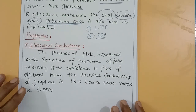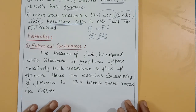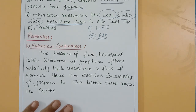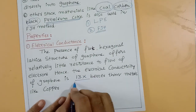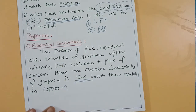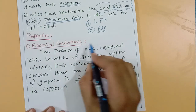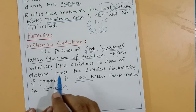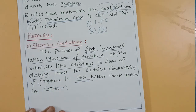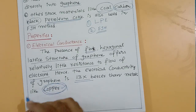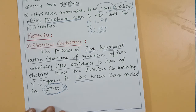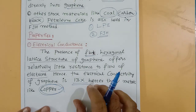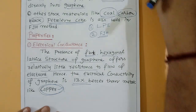Let us enter into properties. First property: electrical conductance. Graphene can allow electricity 13 times better than copper. This is due to its hexagonal structure.